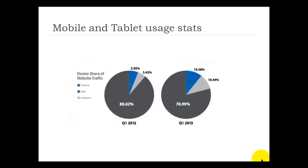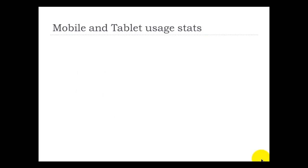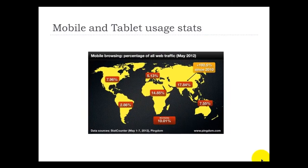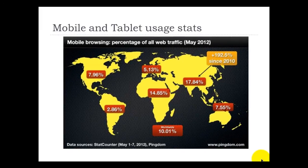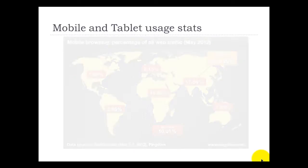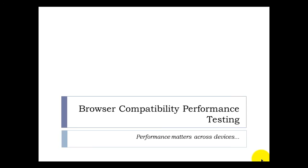Here are the mobile and tablet usage statistics. From the graph it is clear that the usage of mobiles and devices are skyrocketing nowadays. It is very important for any organization to develop and deploy applications which should work fine across all devices. In this presentation we are going to see about browser compatibility performance testing.